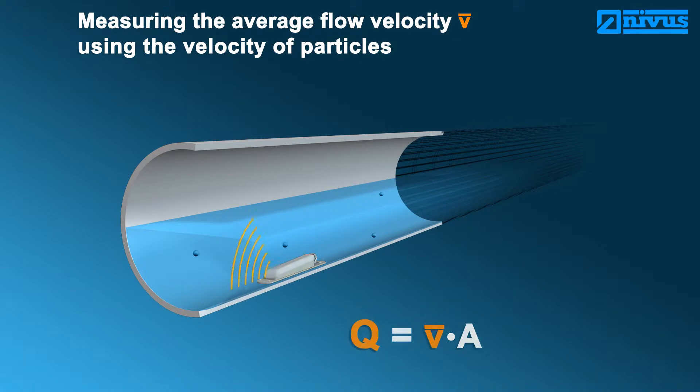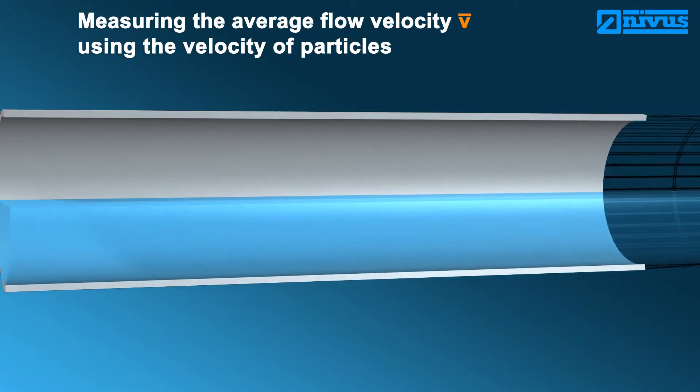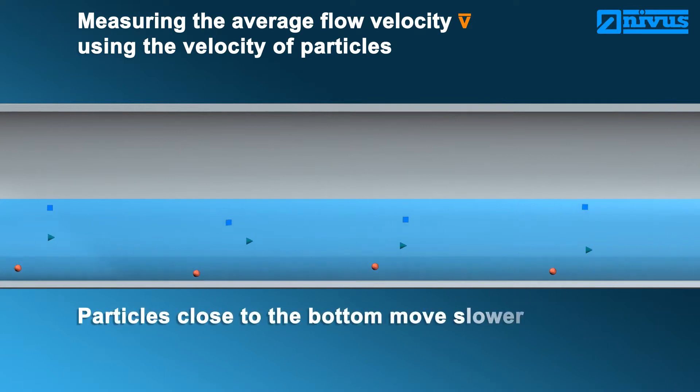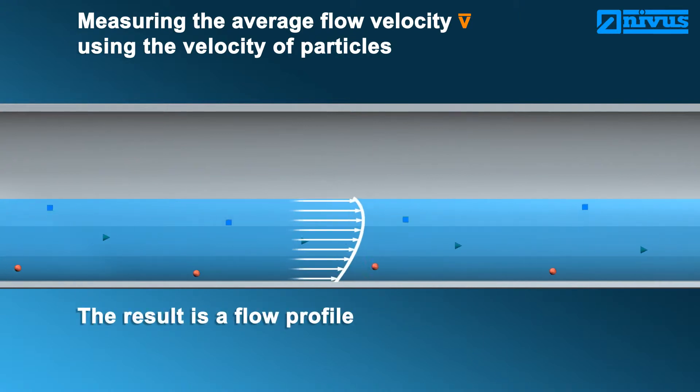The main difficulty while detecting the average flow velocity is that there are varying velocities prevailing at varying levels. The medium and hence the particles normally flow slower at low levels than at higher levels. From this, a so-called flow profile can be obtained.